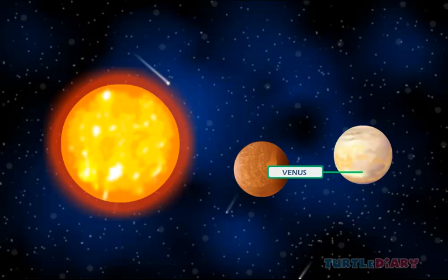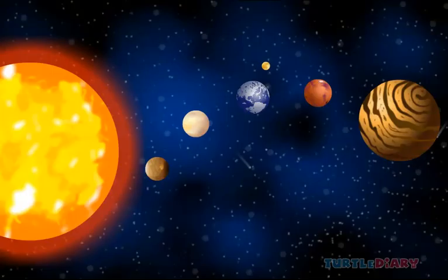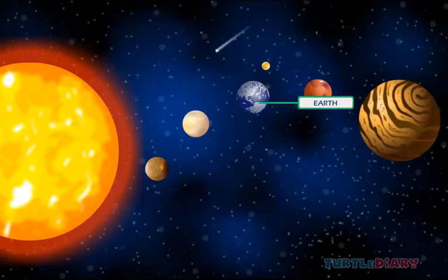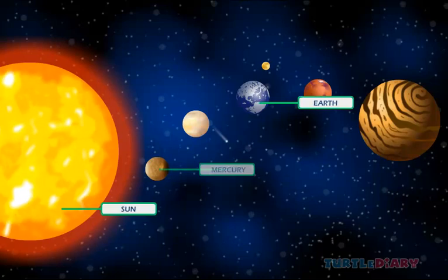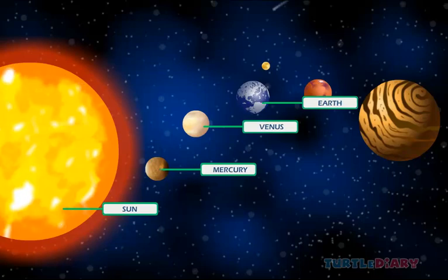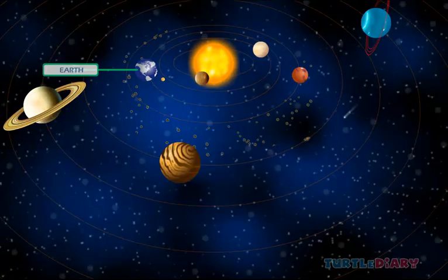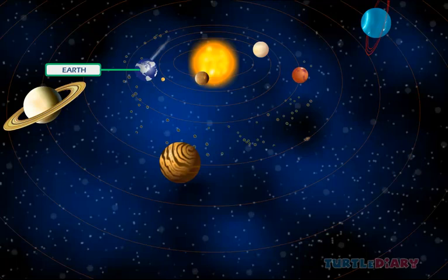Venus is the hottest planet of the solar system. Earth is the planet where we live. It is the third planet from the sun, after Mercury and Venus. Earth is the fifth biggest planet of the solar system. But all the planets are tiny in comparison to the sun.